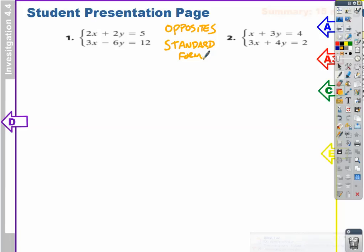Let's take a look at our first system. We have 2x plus 2y equals 5, and we have 3x minus 6y equals 12. My first question is, do we have opposites? Not so much. Because 2x and 3x, they're not opposites. No opposites.